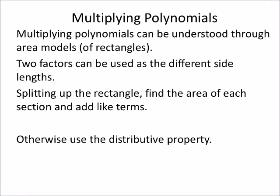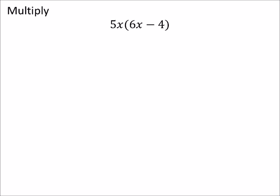Multiplying polynomials can be understood through area models. I used to do those until I found that everyone really hates them, so I don't anymore. Two factors can be used as the different side lengths. That's just where the rectangle stuff comes in. For the most part, we're just going to be using the distributive property.